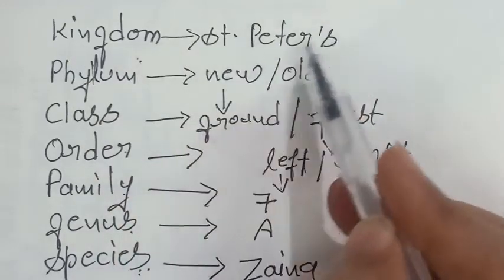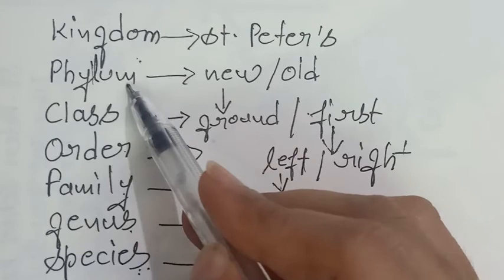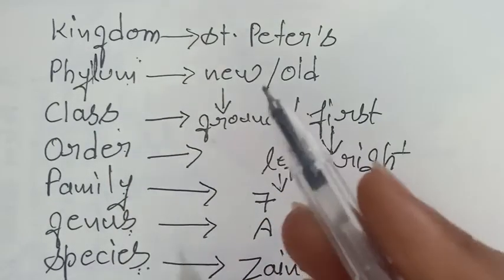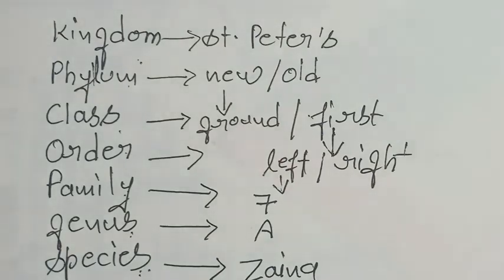Like a big group is kingdom, then the lower group is phylum, then lower group is class, then order, then family, then genus, and the lowest one is species. So I think everything is very clear up to here.